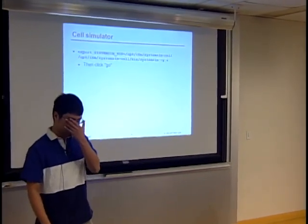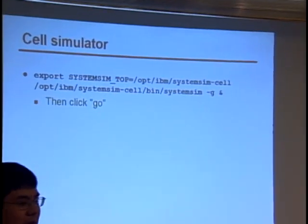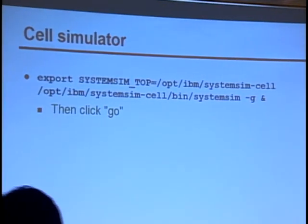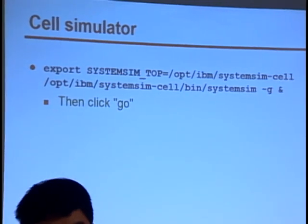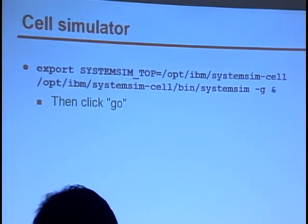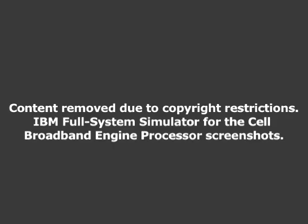The cell simulator is one of the tools available to help you debug. This is how you invoke it if you have it installed: opt/IBM/systemsim-cell/bin/systemsim. You want to use dash G to use the graphical interface and a little window will pop up and you click go. From there you have a lot of fine-grain control over how your program is running. In fact, you can advance the state of the simulation cycle by cycle to look at what's going on inside the simulated cell system. When you boot up this simulator, you can actually get a complete Linux environment with an X term. You can copy over programs which were compiled for the cell and then run them.